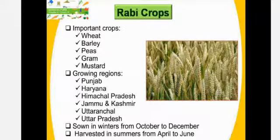Good morning to all my dear children. I am once again here before you with the same chapter agriculture. Today we would study about the cropping season. Just as we experience several seasons in a year, agriculture in India also follows three distinct cropping seasons. They are Rabi, Kharif and Zaid. So let us study about them in detail.